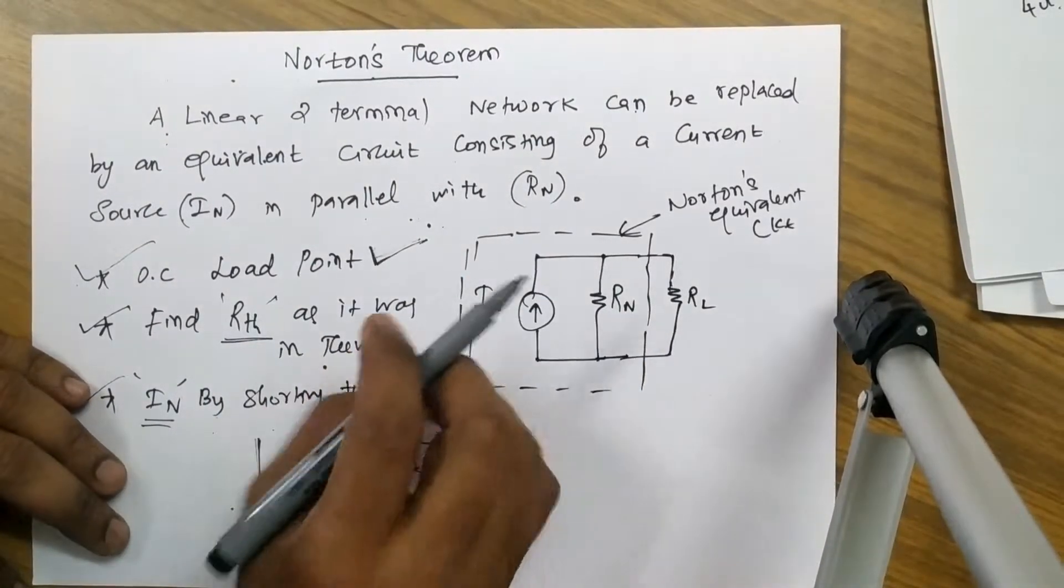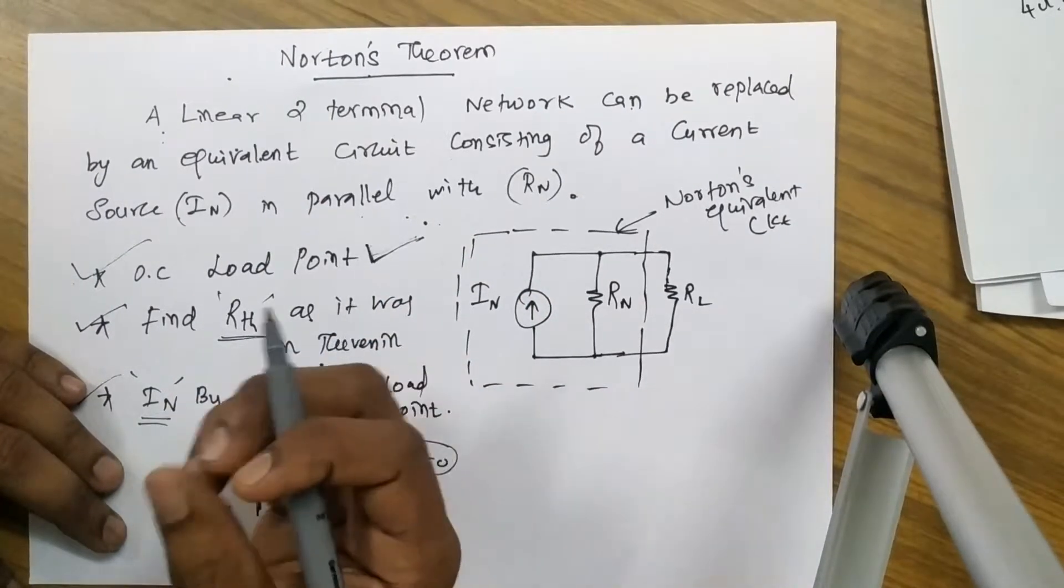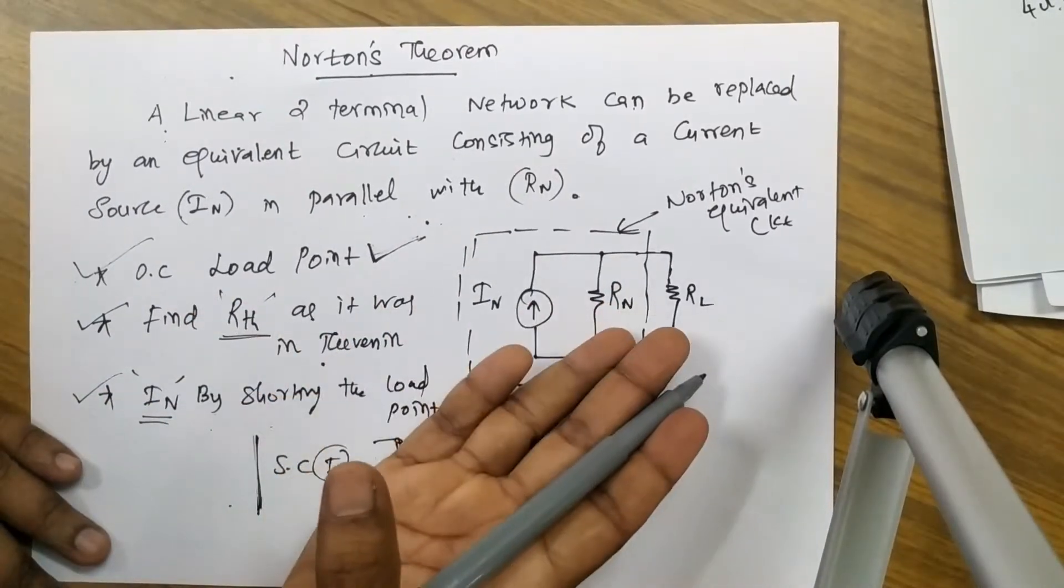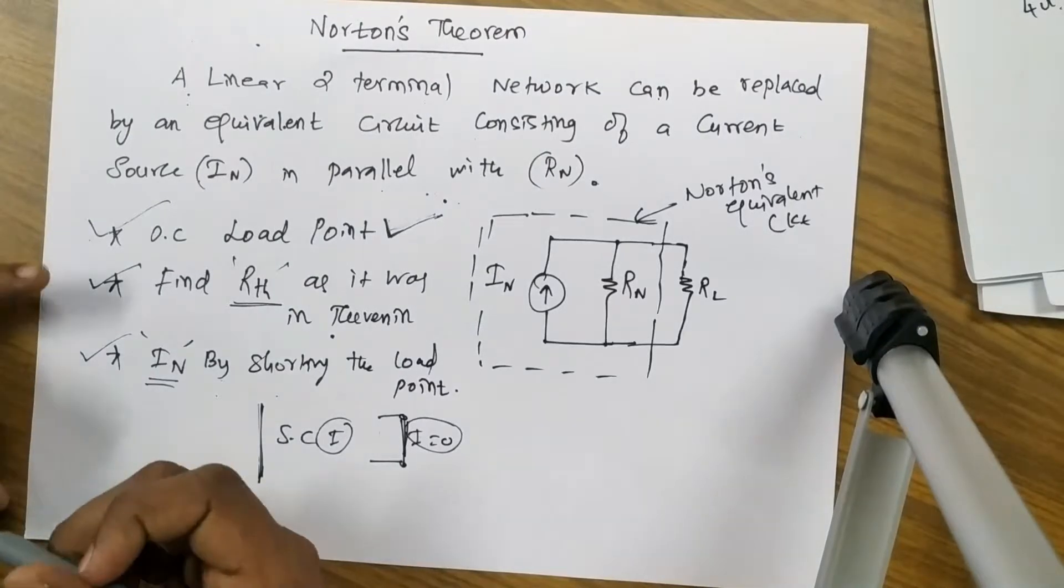Apart from this, Norton's theorem and Thevenin's theorem, they used to make the complex circuit into a simpler circuit like this. What are the procedures we followed here?